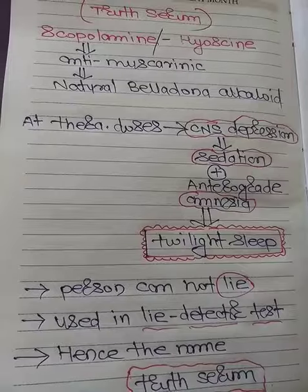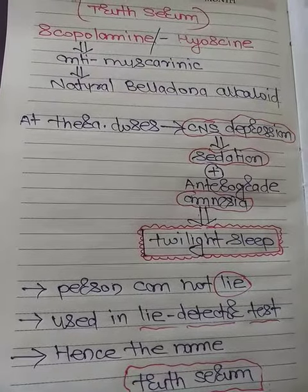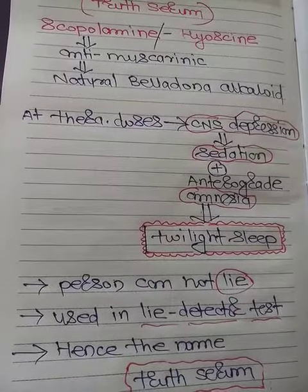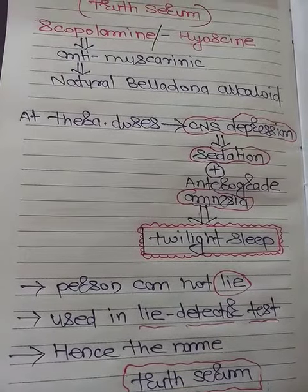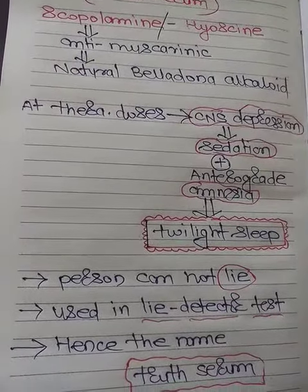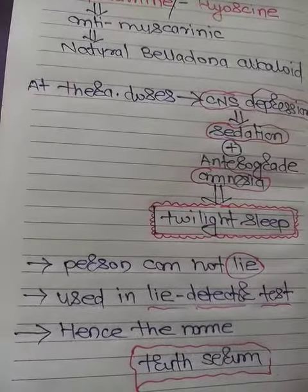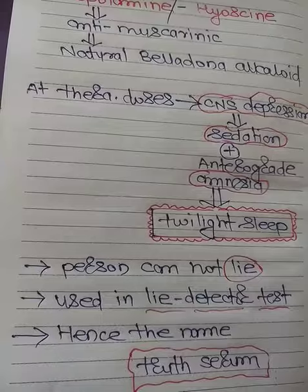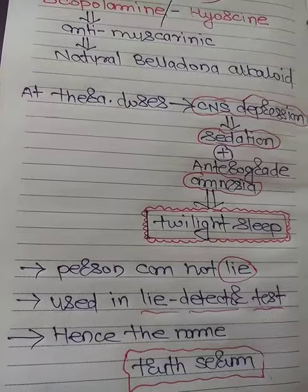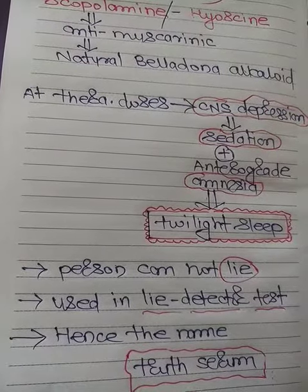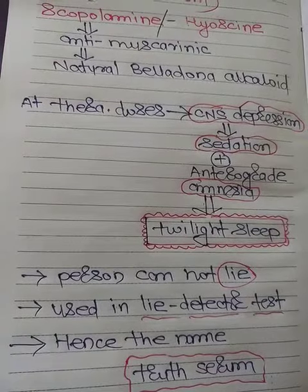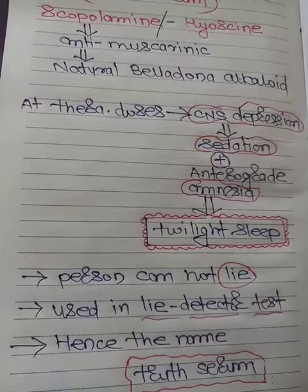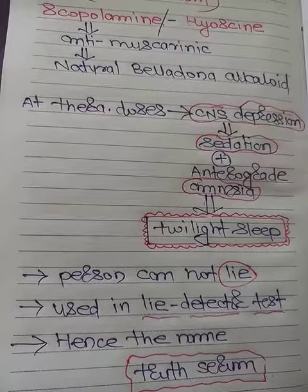Because of anterograde amnesia, the person forgets things in short-term memory, so they cannot lie. That's why we can use scopolamine in a lie detector test. Hence it is also called a truth serum, because the person cannot lie in that particular state called twilight sleep. That's why scopolamine or hyoscine is used in the lie detector test as a truth serum.